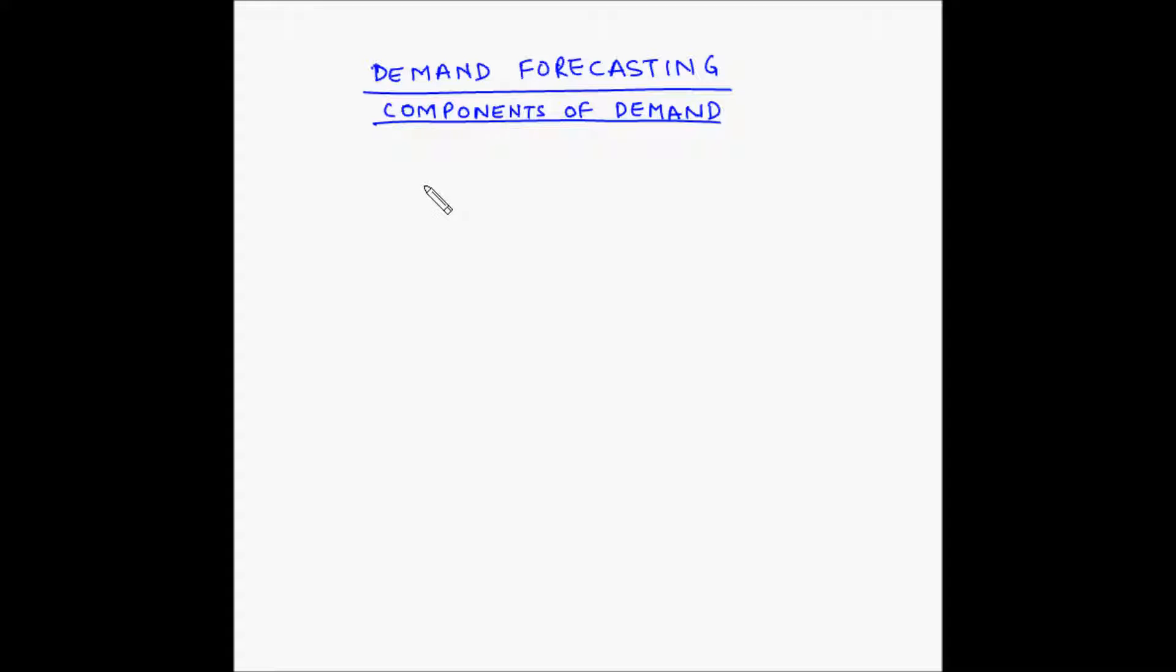Demand can be broken down into multiple components. In this video we will understand the various components of demand. A time series is the result of a number of movements which are caused by numerous economic, political, natural and other factors. If we decompose the past data or the historic data, we will find five main components of that data. Let us look at those components in detail.